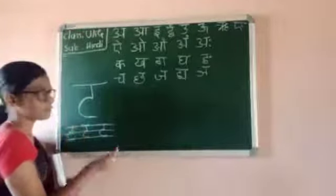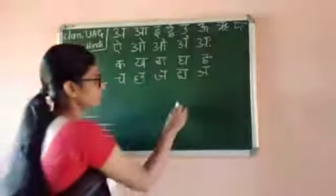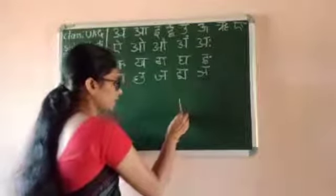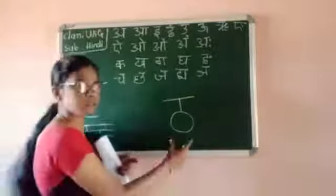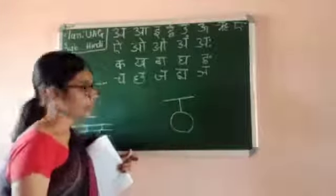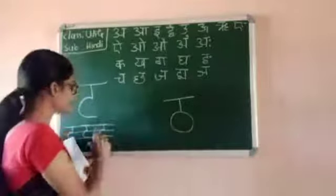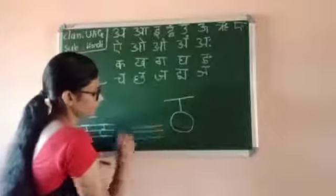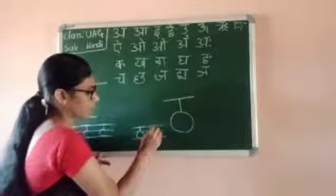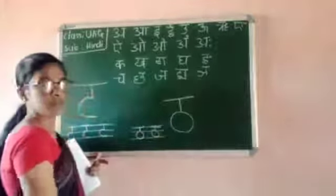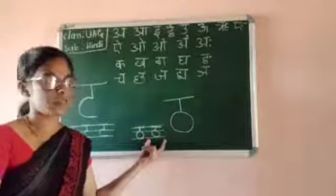After small Ta, the next letter is big Ta. Look at here. First, you have to write a straight line, then a big circle, and then a flipping line. This is called big Ta. Same as before, children — first write the big letter on one page and trace it. Also write it in your three-line notebook. Straight line, big circle, and last a sleeping line — one, two, three. Write like this, children.